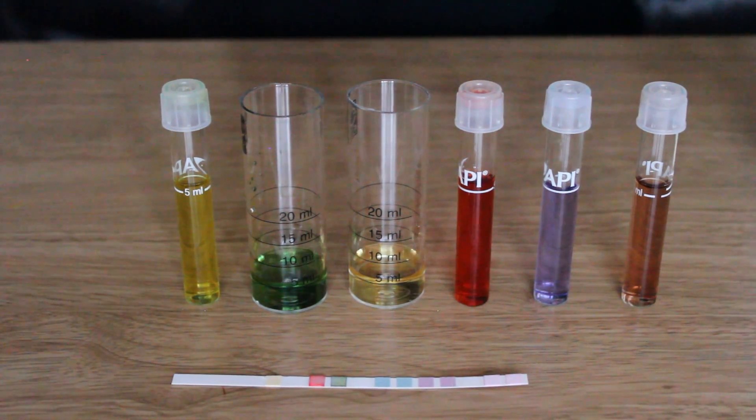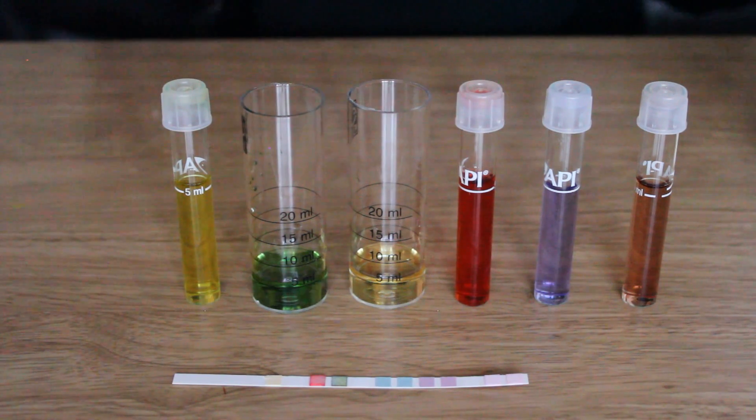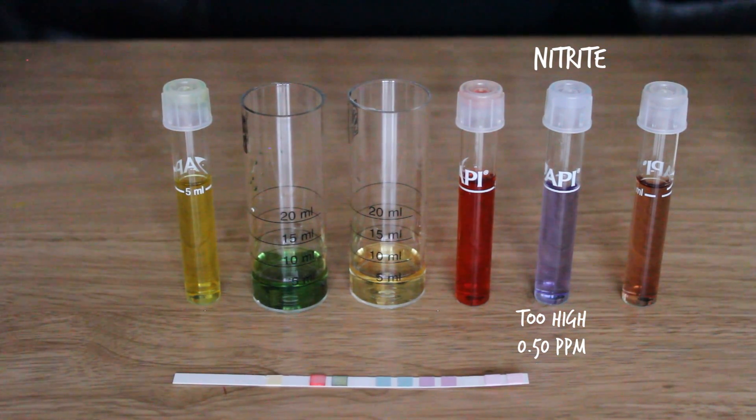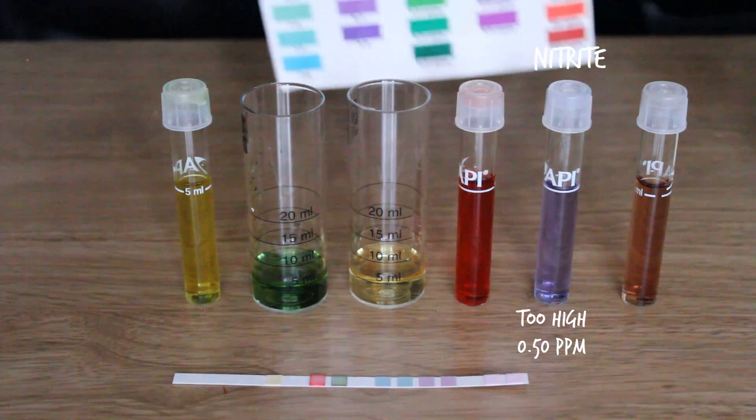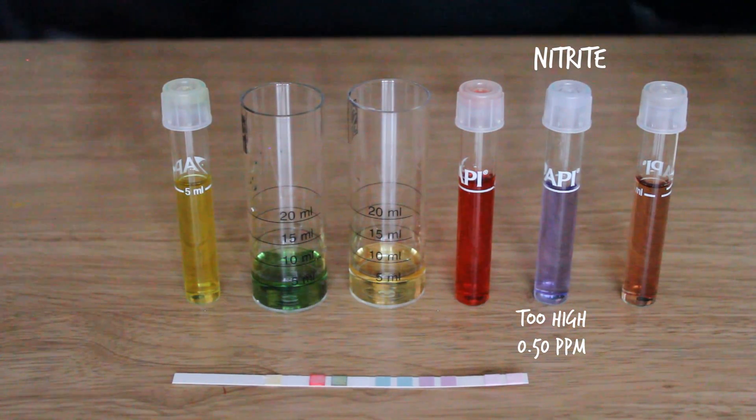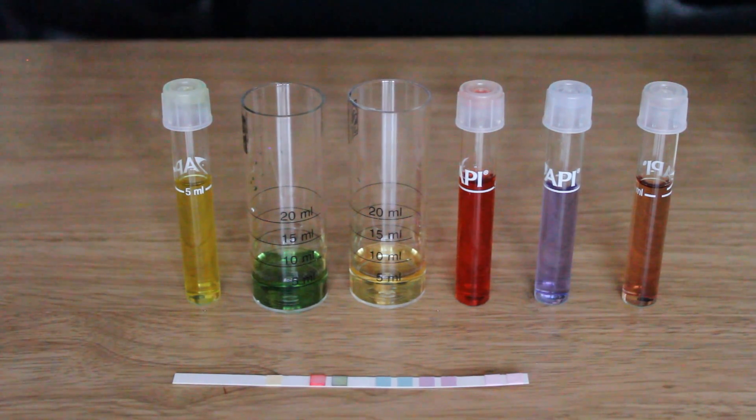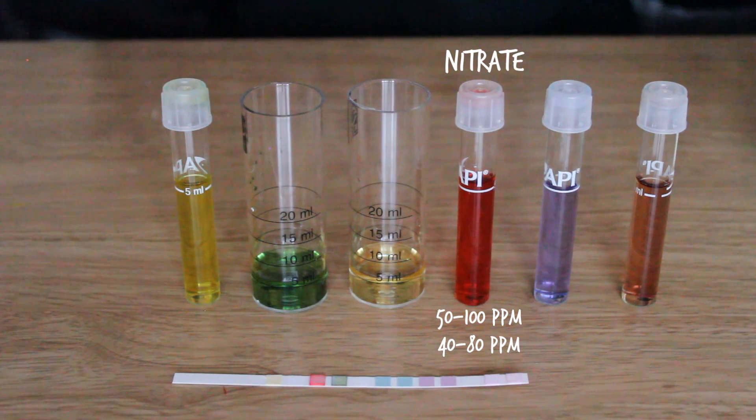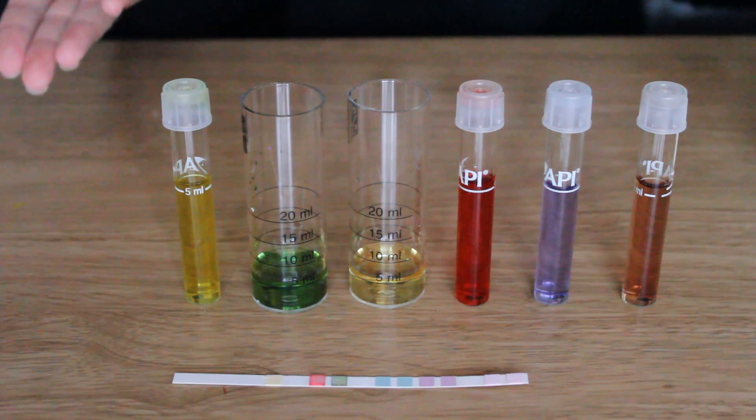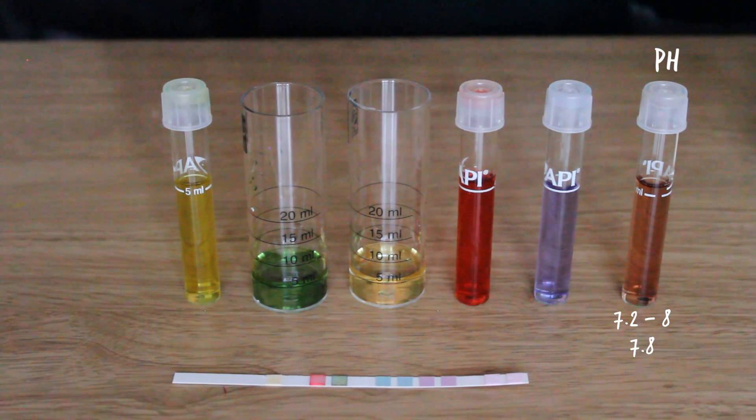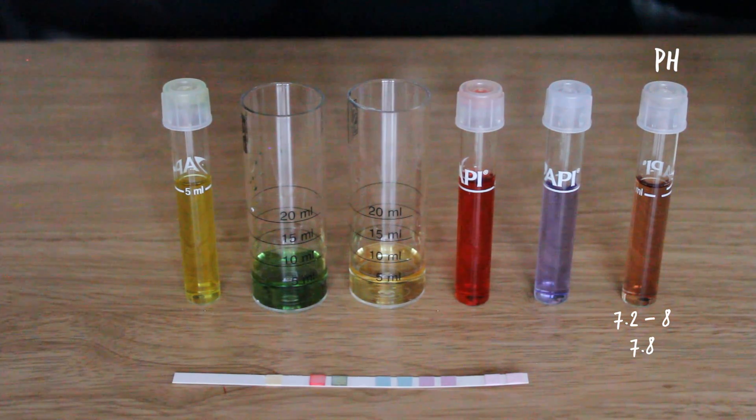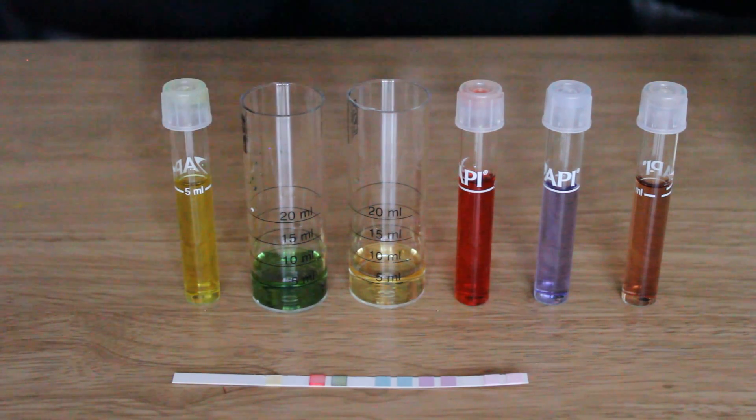If we compare what we got from the test strip to all of the other results they pretty much seem on point. The nitrite it said was too high, from the actual tester kit it was sort of midway. The nitrate on the test strip said 50 to 100 and we got 40 to 80, so once again in the same region. pH they said 7.2 to 8 and we got about 7.8. Ammonia we did not test on the test strip.